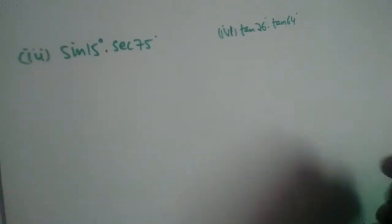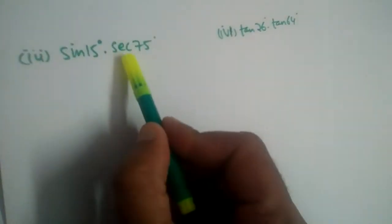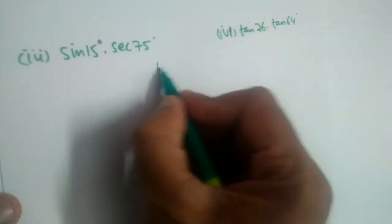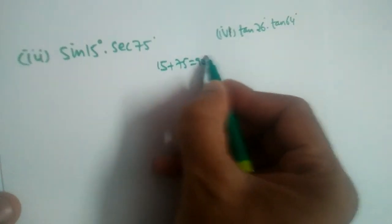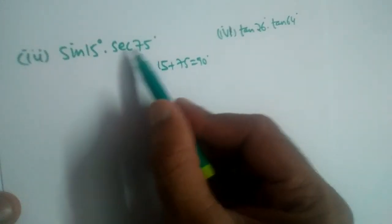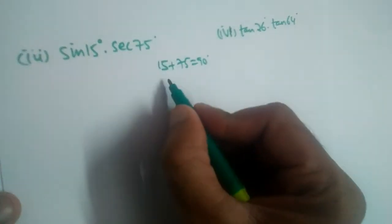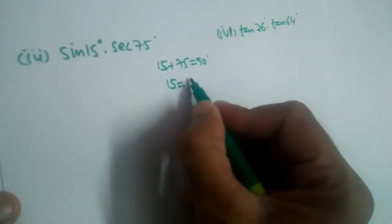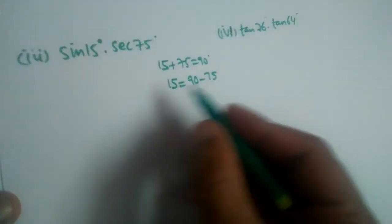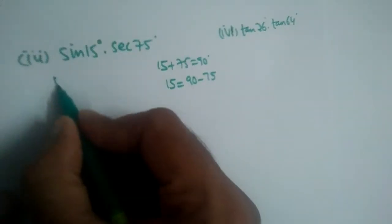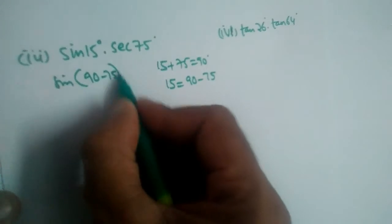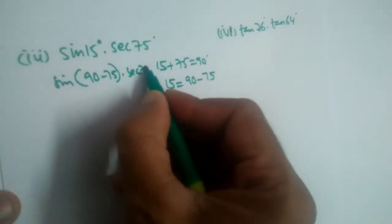We have these two questions. In the first, we'll solve sin(15°) × sec(75°). Since 15 and 75 add up to 90, we should change one of them — not both. So let us change 15, which can be written as 90 minus 75. So in place of sin(15°), we write sin(90° - 75°), multiplied by sec(75°).